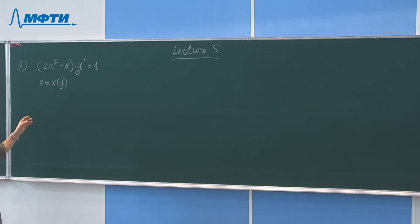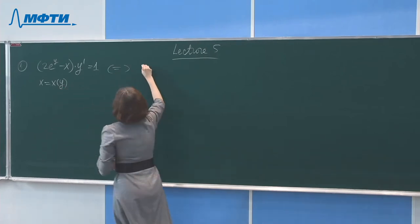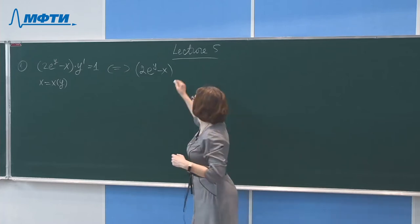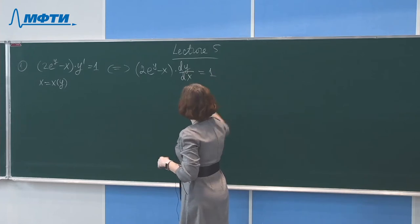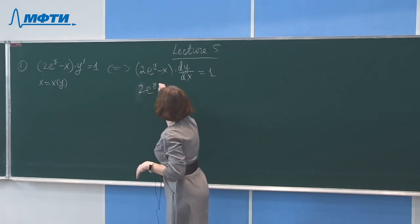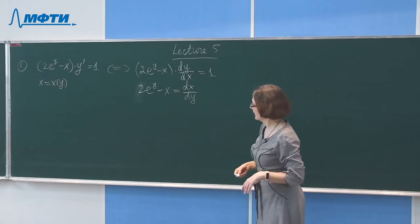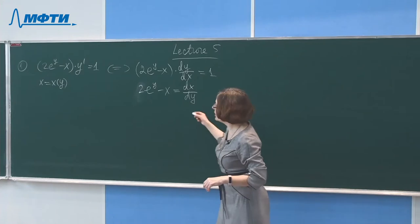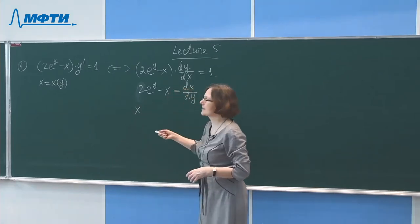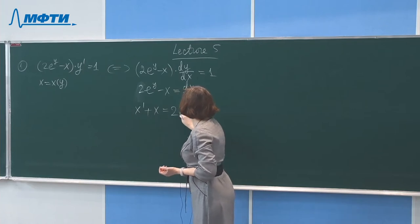We rewrite: dy over dx equals 1, and if we rewrite the equation in the form 2e^y minus x equals dx over dy, this differential equation is reduced to a linear differential equation with respect to x, where x is viewed as a function of y. We then solve x-prime plus x equals 2e^y.